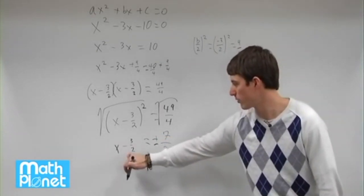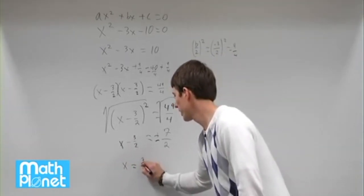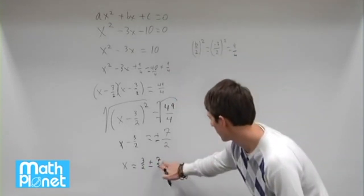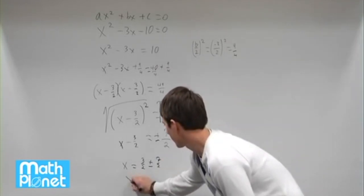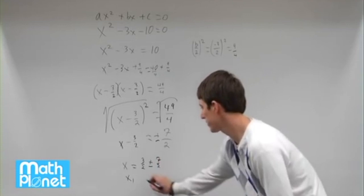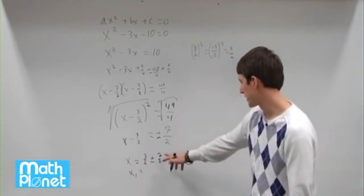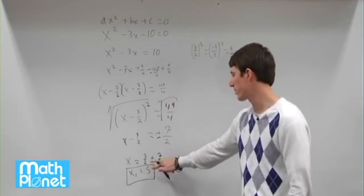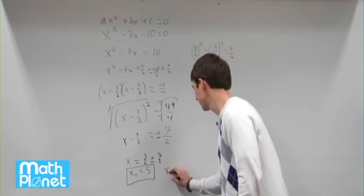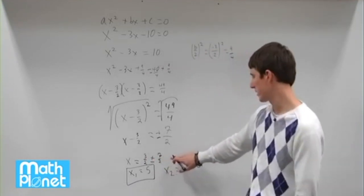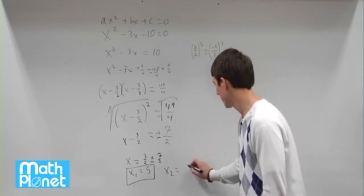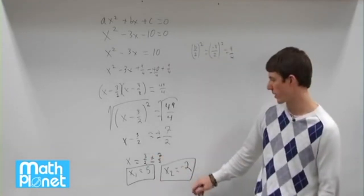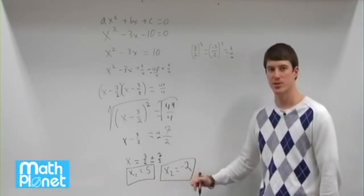Finally one more step. We need to get this x all by itself. We add 3/2 to both sides. So x equals 3/2 plus or minus 7/2. 3 plus 7 is 10, 10 divided by 2 is 5, so we have x₁ equals 5. Now we have 3/2 minus 7/2, so x₂ equals 3/2 minus 7/2 is negative 4/2. Negative 4 divided by 2 is just negative 2. So we have 2 mini equations here at the very end. So this gives us x₁ is 5, x₂ negative 2.